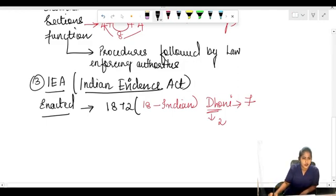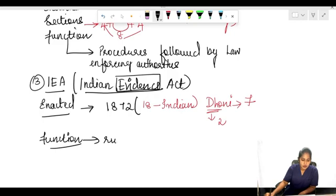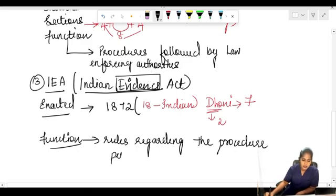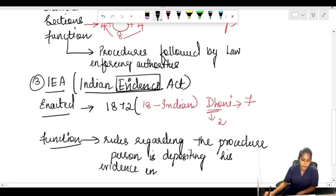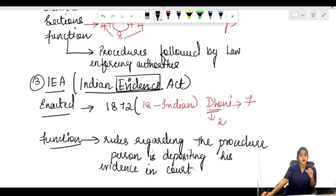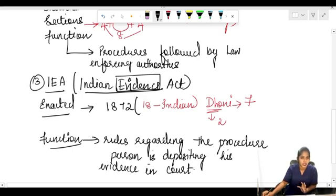Number of sections we are not much interested, but the function we are interested in. Like the name suggests here, it is about the rules regarding the procedure in which the person is depositing his evidence in the court. First the crimes we have dealt, and next the procedure we know. Someone has to deposit the evidence, right? What are the rules for this? This Indian Evidence Act has the rules for which the evidence is being deposited in the court.